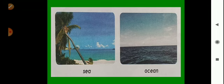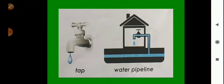All water bodies are sources of water for living things. Trees get water from rain. Animals get water from rivers, ponds, lakes, streams, and waterfalls. Human beings get water from wells, rivers, lakes, ponds, and waterfalls. Nowadays in cities we get water from a tap, and also from pipelines which come into our houses and are joined with the tap.